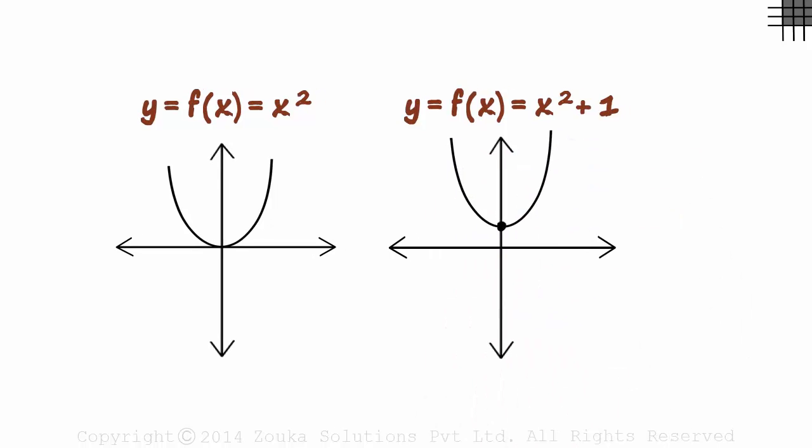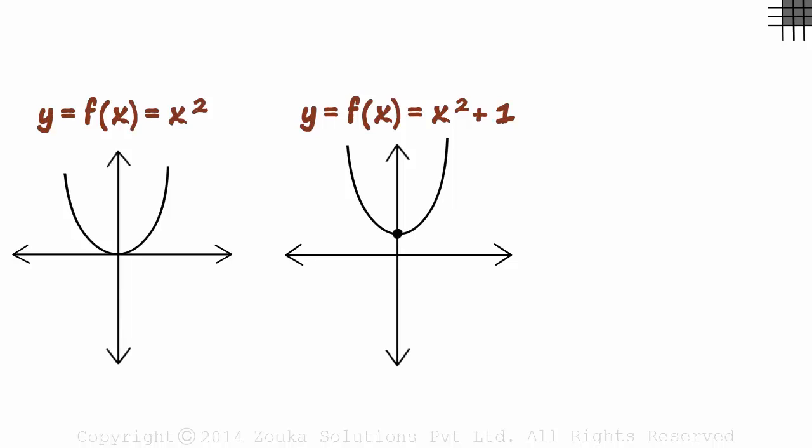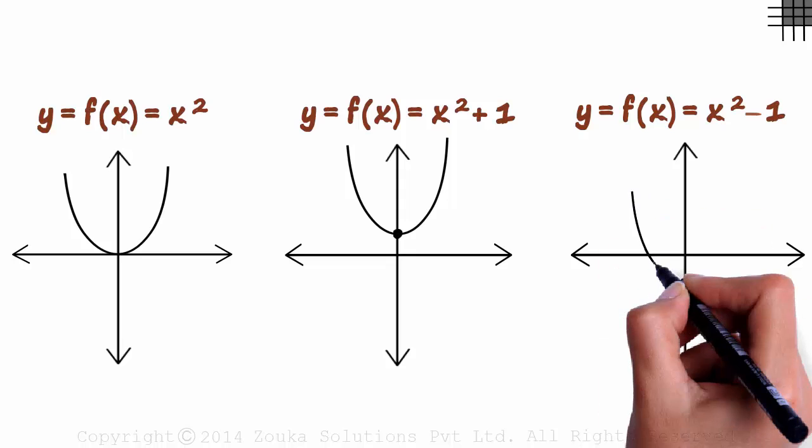Interesting! Now try drawing the approximate graph of this function. When x is zero, y will equal zero minus one, which is minus one. Zero comma minus one will be the point. The parabola will look a bit like this.